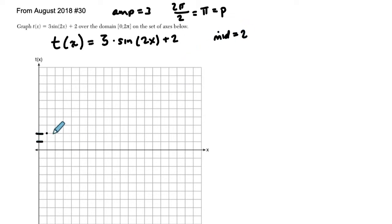Midline, here it is, 2. So I'm just going to draw a dotted line. It's not really part of the graph, right? It's just a reference point.